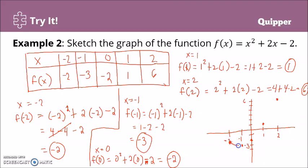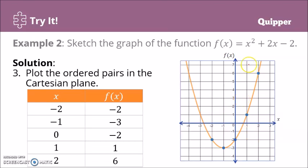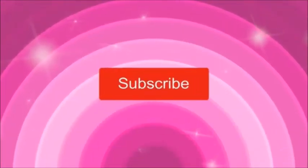We connect the points — something like this. We can actually assign another value for x, like negative 3, just to check where the graph goes on the left side. This is what the graph actually looks like. In the table of values, there's no limitation on how many values you want — you can use 6 or more, just to have a clearer illustration of the graph. Thank you.